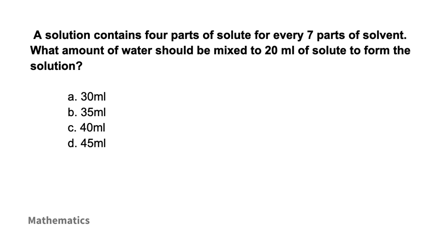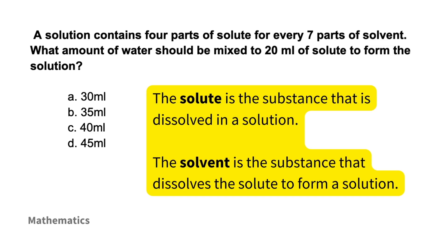To find the amount of water or solvent that should be mixed with the solute to form the solution with the given ratio, we can set up a proportion. Remember that the solute is the substance dissolved in a solution and the solvent is the substance that dissolves the solute. So we'll use this proportion to find the amount of water.